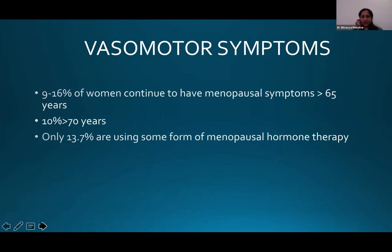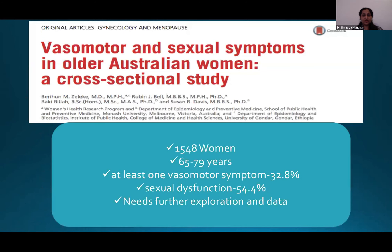We often think vasomotor symptoms stop once early menopause is over, but in fact 9 to 16% of women continue to have menopausal symptoms beyond 65 years, and 10% beyond 70 years. Only 13.7% of these women are actually on any mode of treatment. A study done in Australia of 1,548 women aged 65 to 79 found that at least one vasomotor symptom was present in 32.8% of this population.